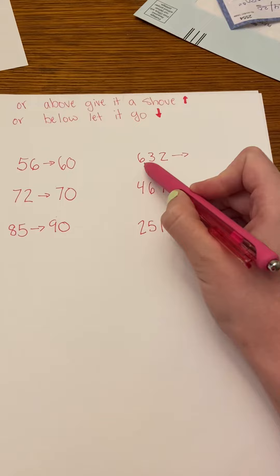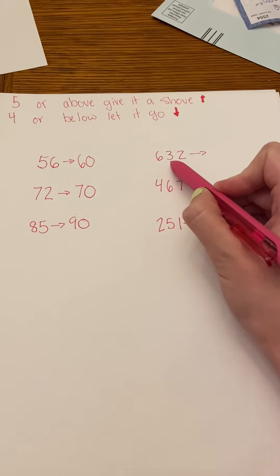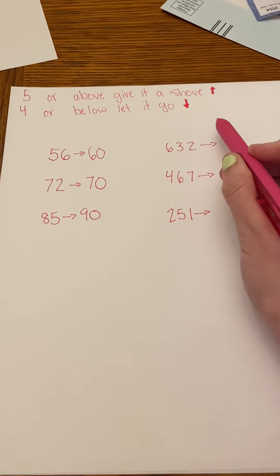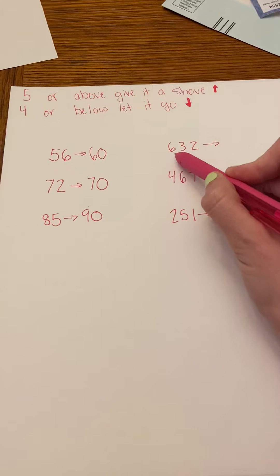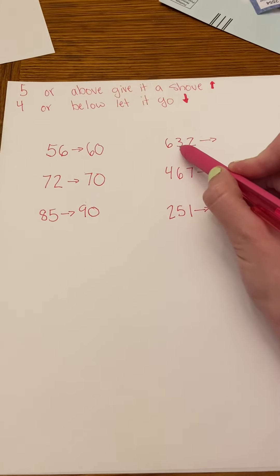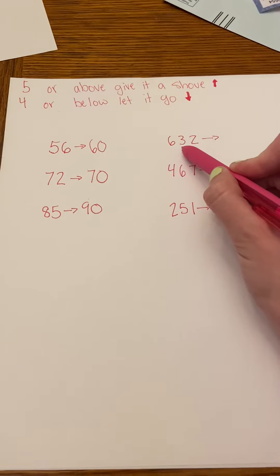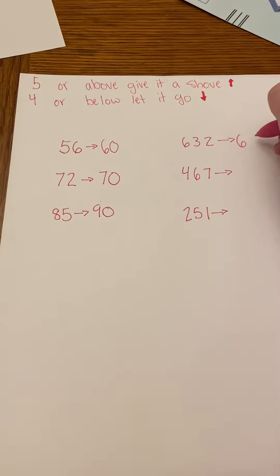So I have 632. I'm looking at the number that's in the tens place to know if I need to round up to the next hundred or below to the hundred that's below. And since my number in the tens is a three, I know I need to round down to the hundred that's below, so 600.